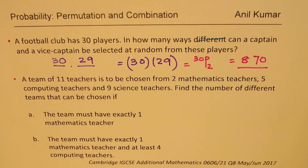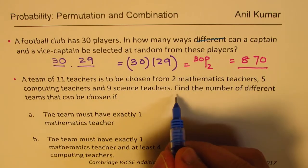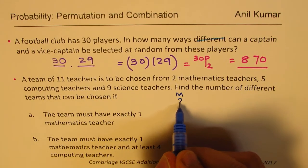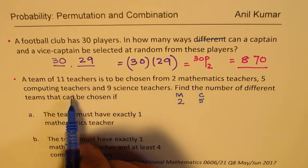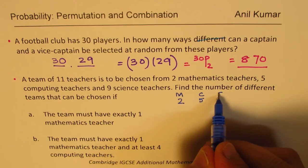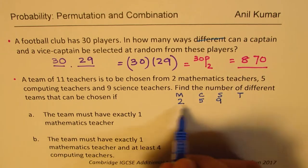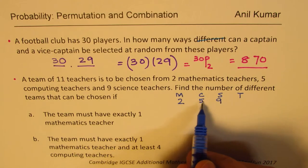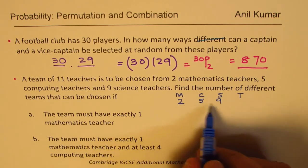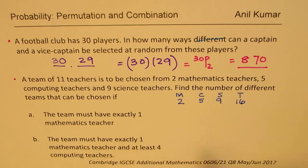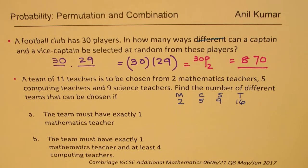Now let's look into the second question. A team of 11 teachers is to be chosen from 2 mathematics teachers, 5 computing teachers, and 9 science teachers. So mathematics we have 2 teachers, computing we have 5, science teachers we have 9. So total, 7 plus 9 which is 16, so total is 16 for us as far as the number of teachers are concerned.